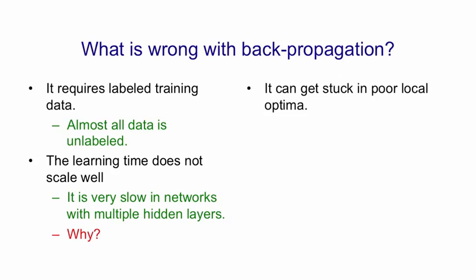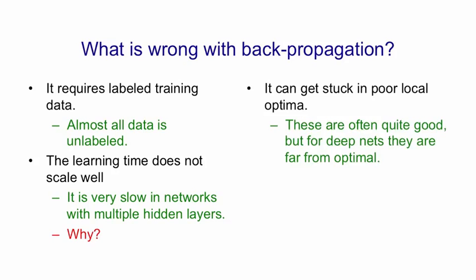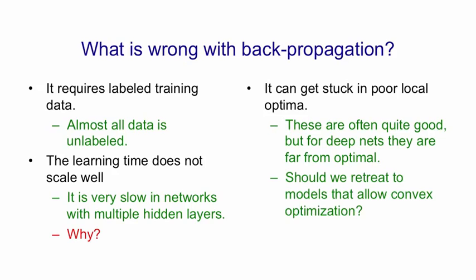Yet another problem is that backpropagation can get stuck in poor local optima. These are often quite good, so backpropagation is useful. But we can now show that for deep nets, the local optima you get stuck in if you start with small random weights are typically far from optimal. There is the possibility of retreating to simpler models that allow convex optimisation, but I don't think this is a good idea. Mathematicians like to do that because they can prove things, but in practice you're just running away from the complexity of real data.